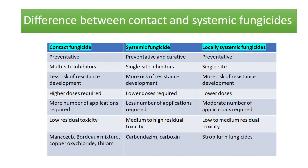Systemic fungicides and locally systemic fungicides pose more risk of resistance development because they are single-site inhibitors. Contact fungicides require higher doses, whereas systemic fungicides and locally systemic fungicides require lower doses because they enter the plant and get translocated. Contact fungicides require more number of applications; locally systemic fungicides require a moderate number. Residual toxicity is low for contact fungicides, medium to high for systemic fungicides, and low to medium for locally systemic fungicides.